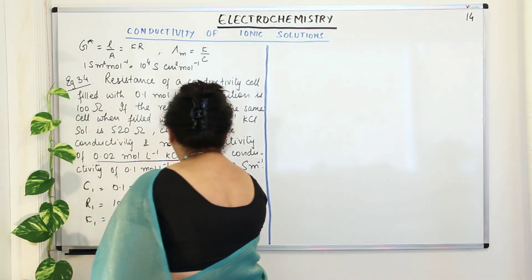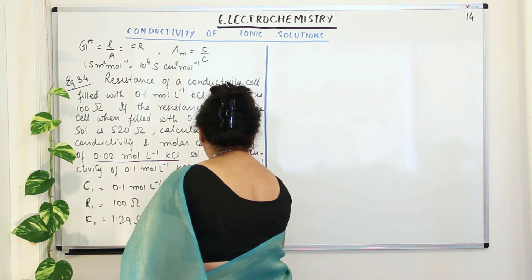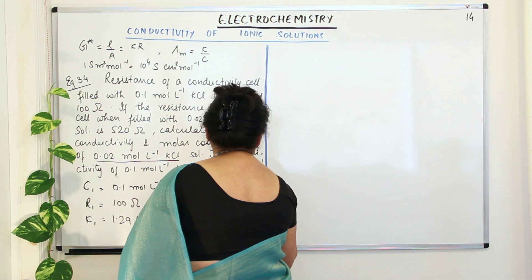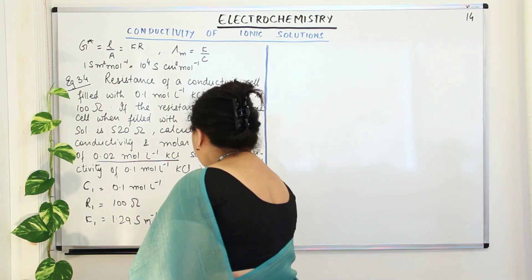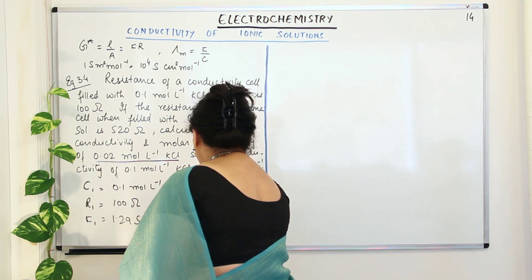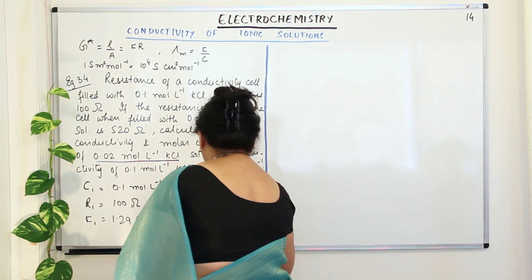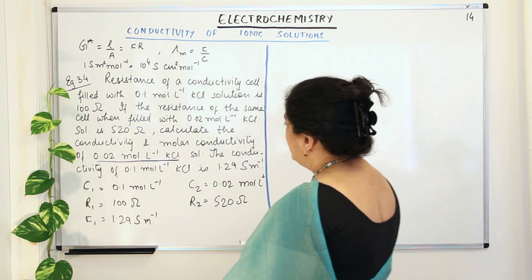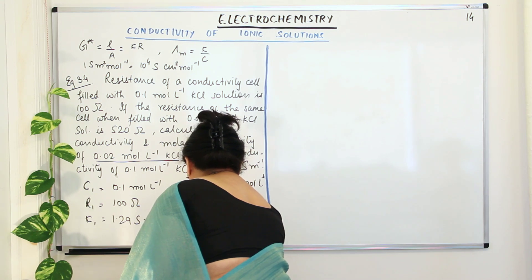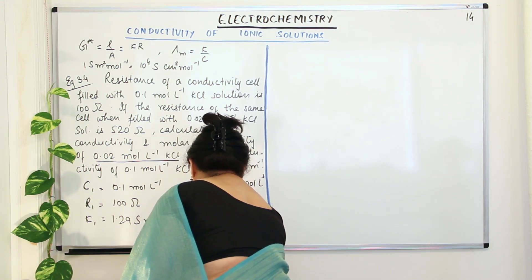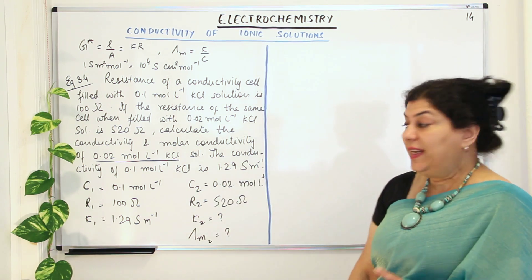The second concentration C2 is 0.02 mol per liter, and R2, the resistance at this concentration, is 520 ohms. You are expected to calculate kappa 2 and lambda m2.